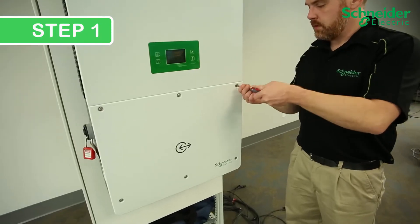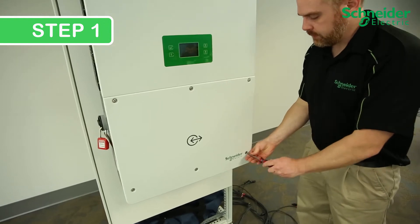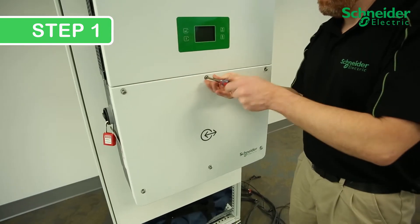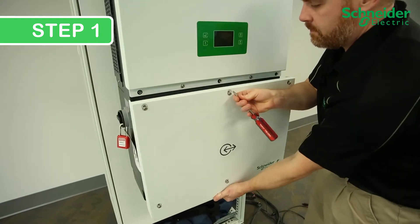Step 1: Completely loosen the 6 T30 screws to remove the lower cover of the CL60, and once removed, place the cover aside in a safe location.